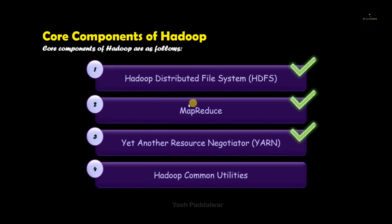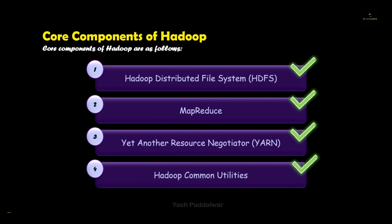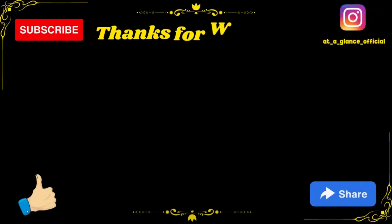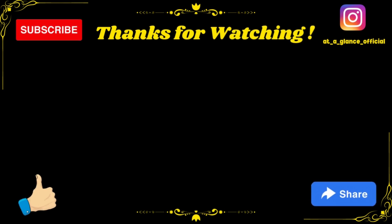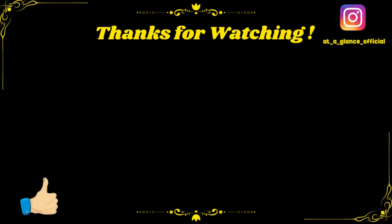This brings us to the end of the core components of Hadoop. We have seen all four components: HDFS, MapReduce, YARN, and Hadoop Common Utilities. Note that whenever you are asked to explain the architecture of Hadoop, you need to explain all four components in detail with their architecture and the diagram discussed in the Hadoop architecture video. For more such videos, do like, share, and subscribe to my channel, hit the bell icon, and don't forget to follow me on Instagram. Thanks a lot for watching.